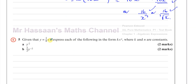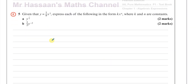Now for number five. It says: given that y equals one eighth x cubed, express each of the following in the form kx to the power of n, where k and n are constants. Basically what we have to do is express everything in terms of x — we've got to get rid of the y.